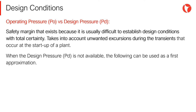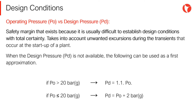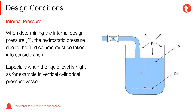If we need to design but only the operating conditions are known, a workaround could be as follows: if the operating pressure PO is higher than 20 bars, the design pressure is 1.1 times the operating pressure. Alternatively, if the operating pressure is less than 20 bars, the design pressure is the operating pressure plus 2 bars. When determining the internal design pressure, the hydrostatic column — that is, the hydrostatic pressure due to the fluid column — must be taken into consideration, especially when the liquid level is high, for example in vertical cylindrical pressure vessels.